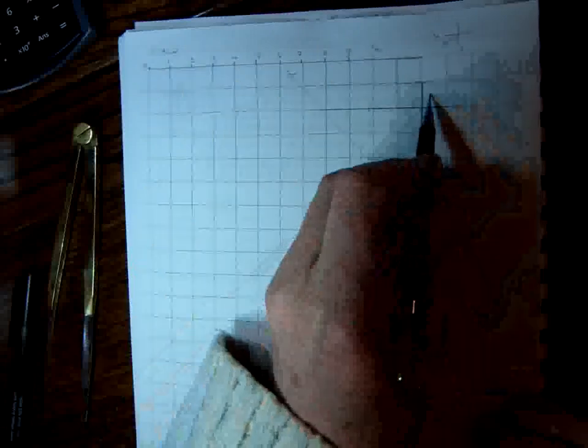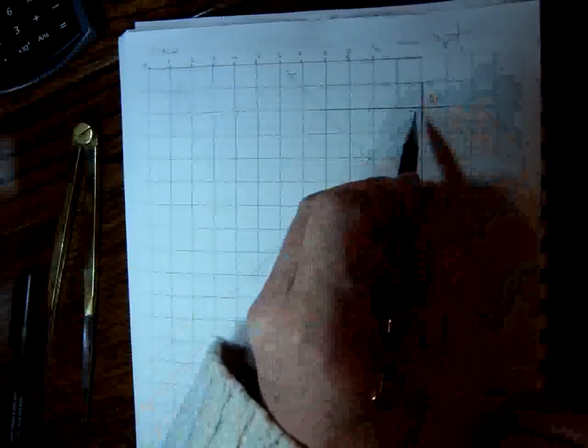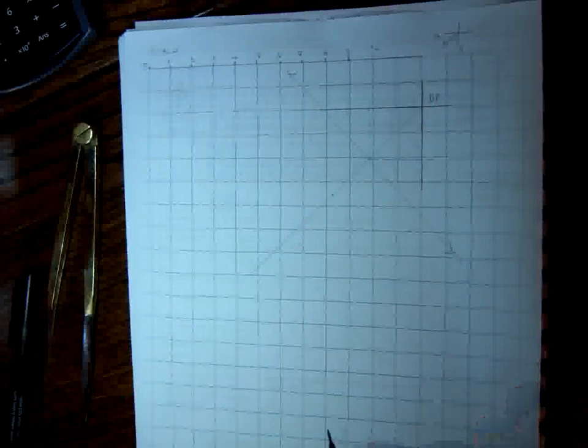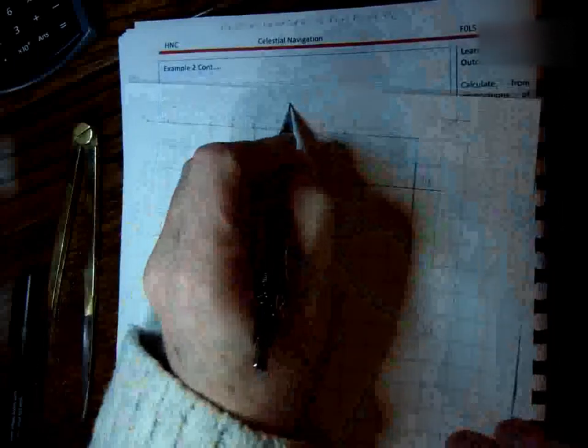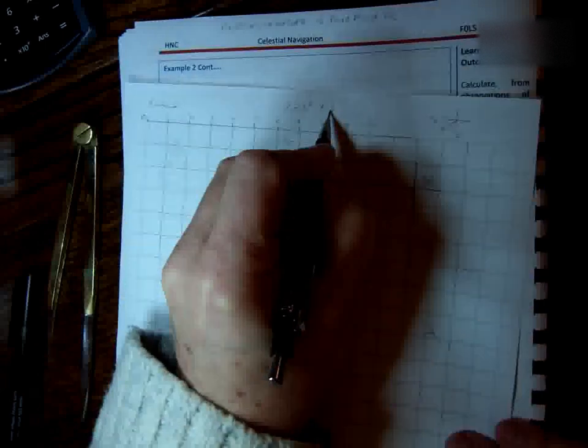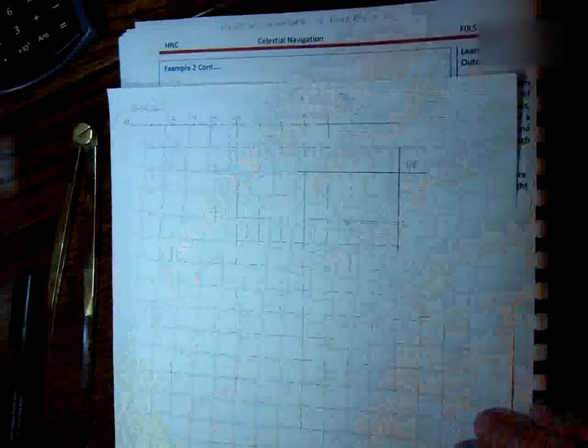And I'm going to put my DR position right here. So that's the DR position of the vessel. That's where we think the vessel is, and we have an intercept of 226.2 degrees. So the interceptor right at the top is 226 degrees by 3 miles towards. So we're towards the bearing at 3 miles.